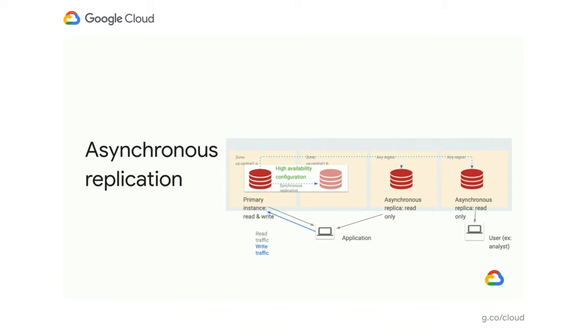In the diagram, we see two replicas that could be in any regions in the world, ensuring a near real-time copy of data elsewhere. From an RTO perspective, in case of a regional outage of our primary region, we can offer roughly a one-to-three minute recovery time — promoting these replicas to become readable and writable to serve application traffic. It allows you to build a database configuration with fairly strict RPO and RTO objectives in case of a widespread outage. The replicas are always readable, so they're also useful for reporting use cases or offering lower latency reads to users in other parts of the world.